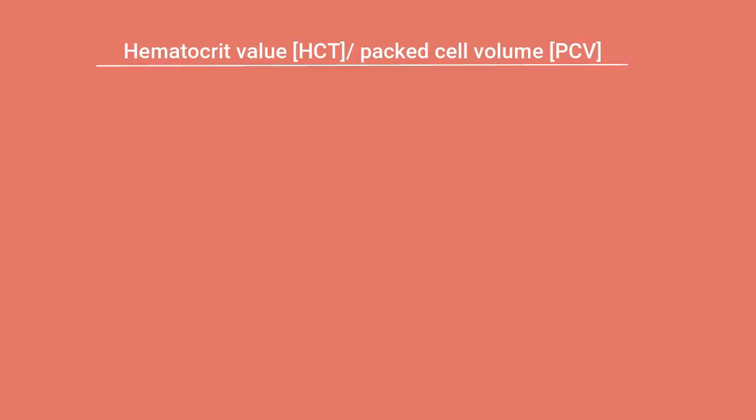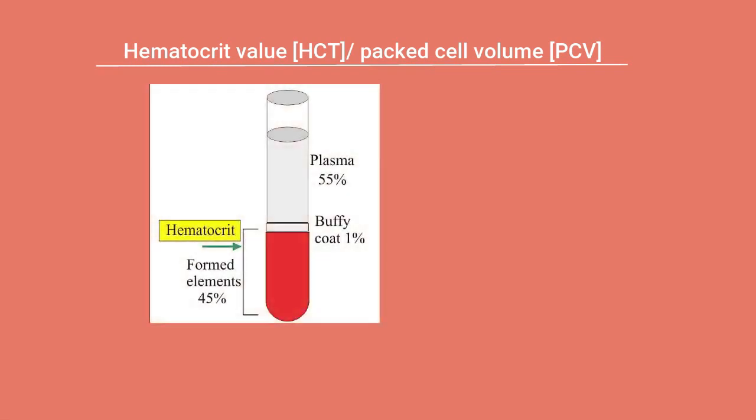After the red cell count, the most important indicator is called the hematocrit value, often written as HCT. It is also known as the packed cell volume or PCV, defined as the volume percentage of red cells in the blood. Looking at a test tube containing blood, it is divided into three segments: the upper segment is plasma, the middle segment contains leukocytes and thrombocytes, and the lower segment contains tightly packed erythrocytes — which is why it is called packed cell volume.